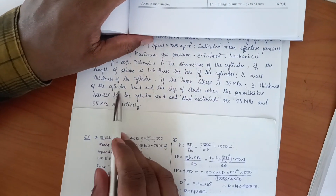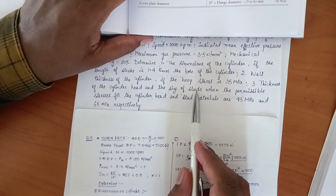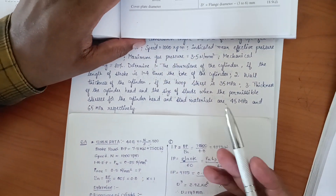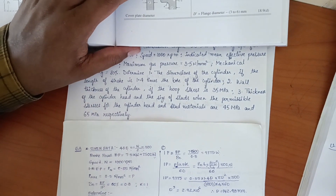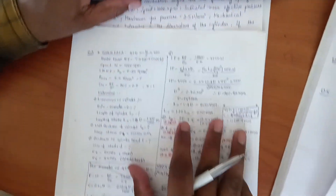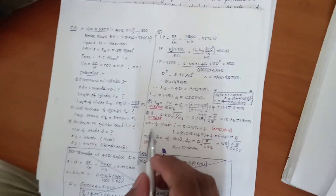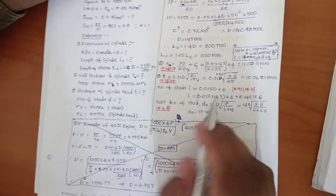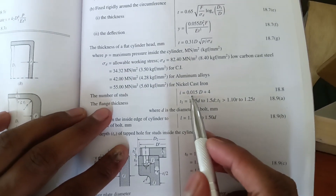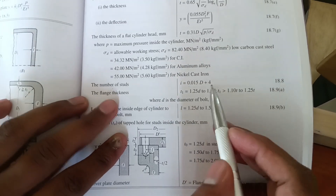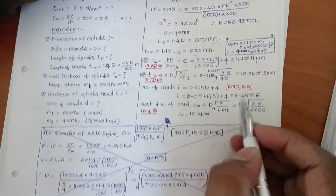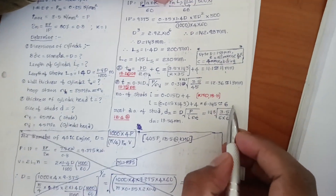The question also asks for the size of the studs. We should also find the number of studs even if not explicitly asked — it will be useful. The formula from the data book (Mahadevan, equation 18.8) for number of studs is: i equals 0.015D + 4, where D is 143 mm. Substituting gives the number of studs.